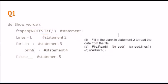Let's talk about statement number two. It involves f dot read. We have read and readline given at two places, but since a loop is being used, we should have something like readlines. So readlines is the correct answer for statement number two.